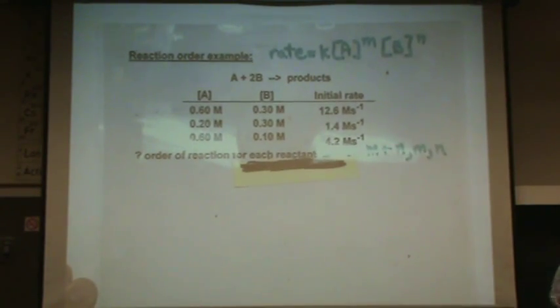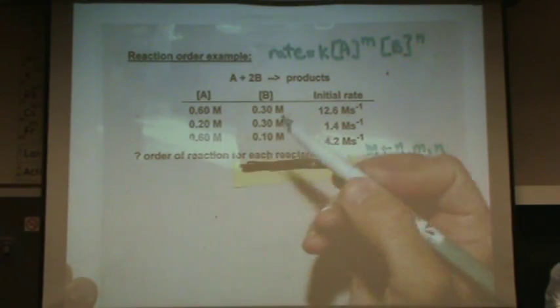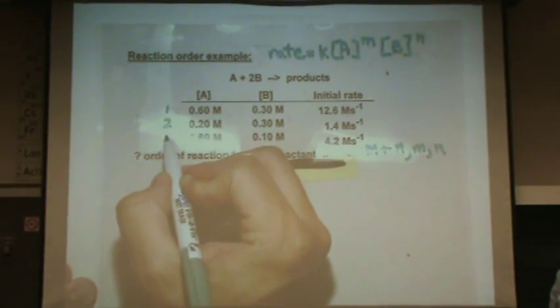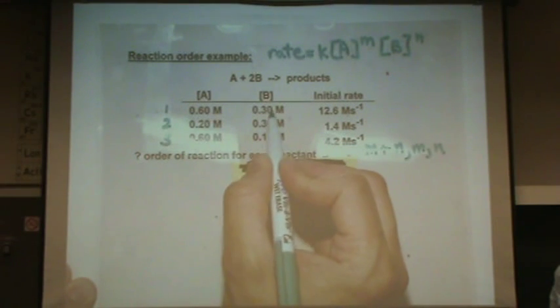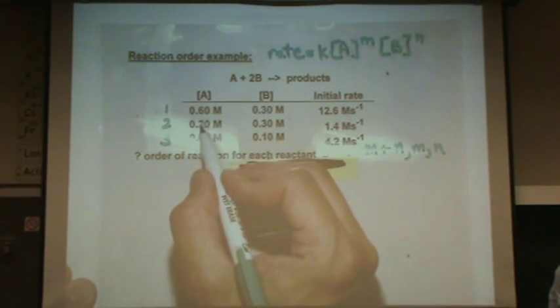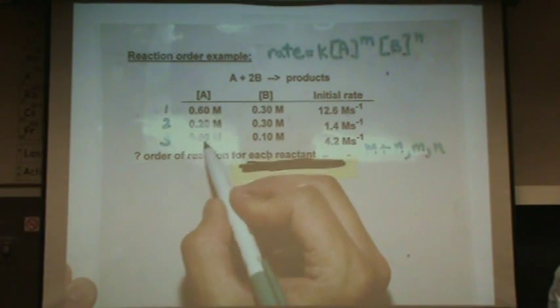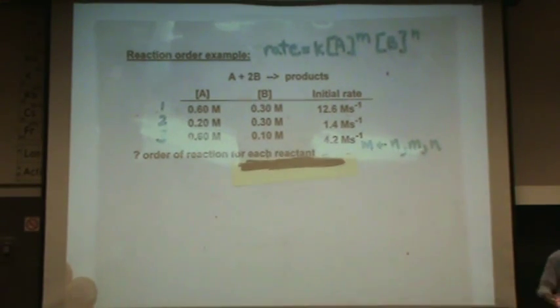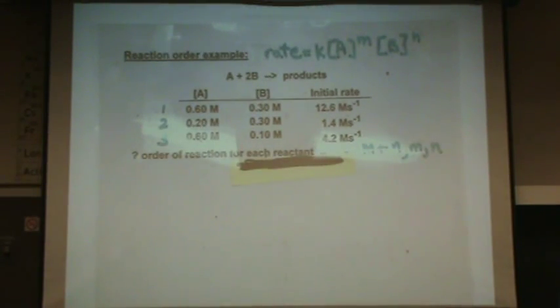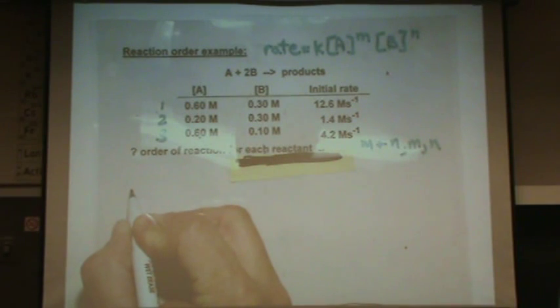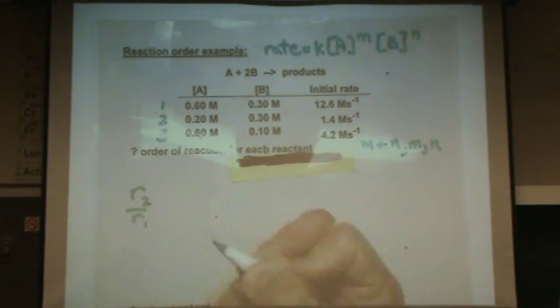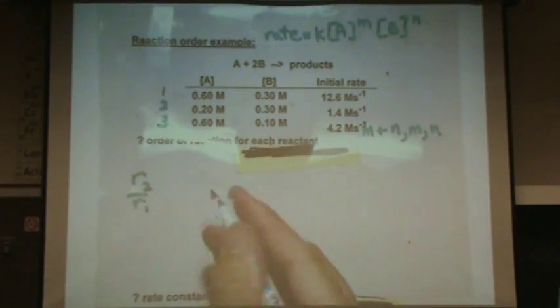For the first part what you're going to do is put your Sesame Street hat on and see what's different than the other. Notice the first two reactions, if I label this one, two, and three: one and two, the concentration of B does not change but the concentration of A does. And then if I compare say one and three, A does not change but B does. That is set up by design by the experimenter. That will always be true that you'll have some concentrations that will not change and you need that to solve the kind of problem we're going to do.